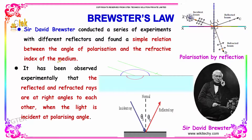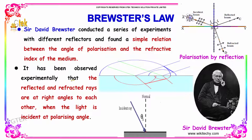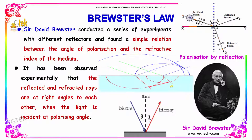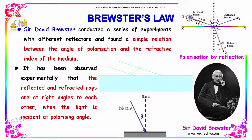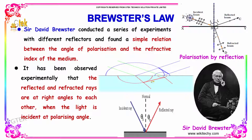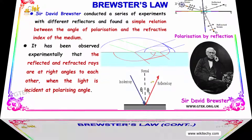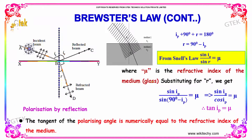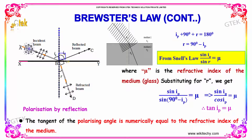It has been observed that the reflected and refracted rays make an angle of 90 degrees when the light is incident at the polarizing angle. As per Brewster's law: ip + 90° + r = 180°, so r = 90° − ip.